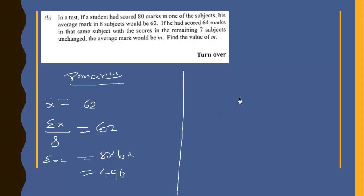Now, if he has scored 64 marks, then his total marks wouldn't have been up to 496. Total marks would have been 496 minus the difference between 80 and 64, which is 16.